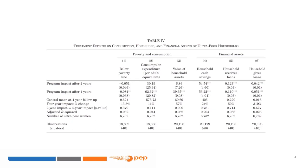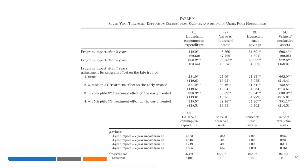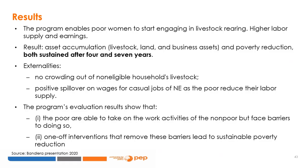Table 10 from the same paper shows that after seven years, the program also managed to increase all these dimensions — expenditure, assets, savings, and the value of productive assets. All in all, the program enabled poor women to start engaging in livestock rearing with higher labor supply and earnings.